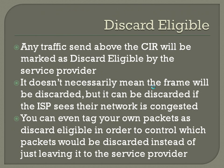Discard eligible: any traffic sent above the committed information rate, or CIR, will be marked as discard eligible by the service provider. It doesn't necessarily mean the frame is going to be discarded — most of the time it'll probably get there anyway — but it can be discarded if the ISP sees that their network is congested. So if your CIR is 500 kilobits per second and you're sending 550K, it's going to mark 50 kilobits of those packets as discard eligible. If the ISP sees its network is congested, it will randomly drop packets marked discard eligible to stay within its bandwidth constraints.